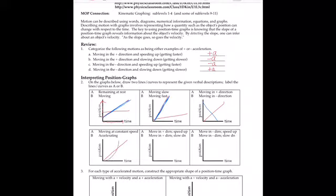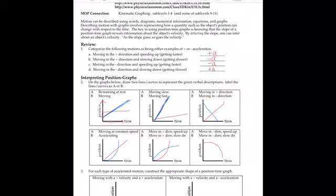Acceleration on a position-time graph looks curved — it's an increasing rate, so it's an exponential relationship. Moving in the positive direction and speeding up gives a curve going upward and getting steeper. Moving in the positive direction and slowing down curves upward but flattens out. Moving in the negative direction and speeding up curves downward and gets steeper. Moving in the negative direction and slowing down curves downward but flattens.